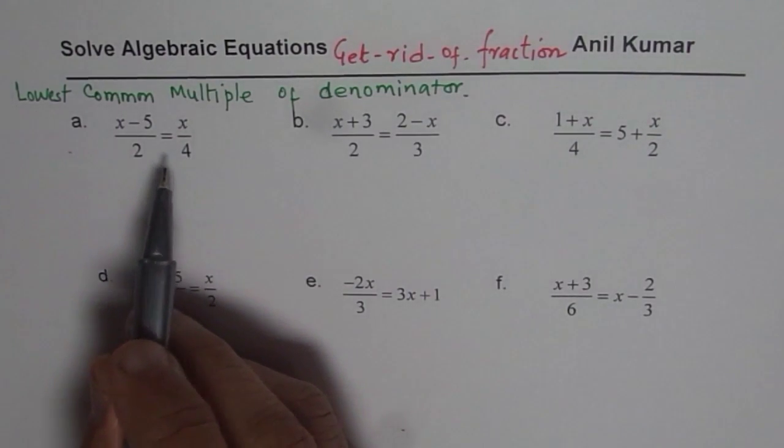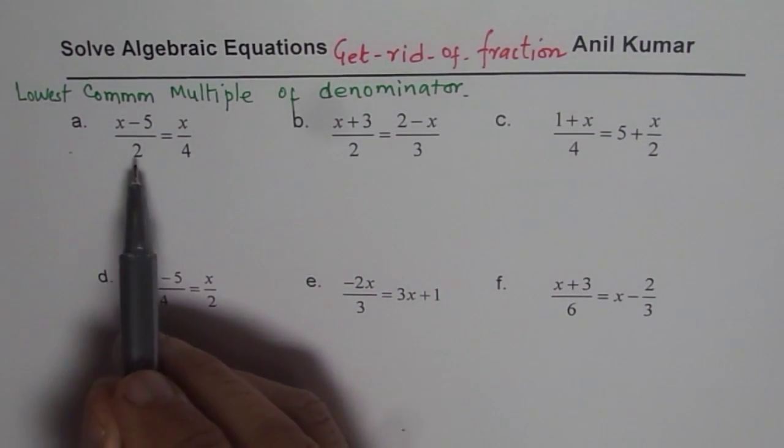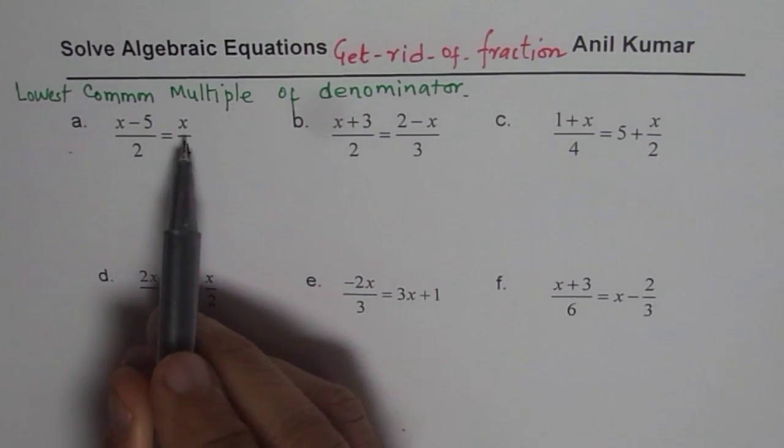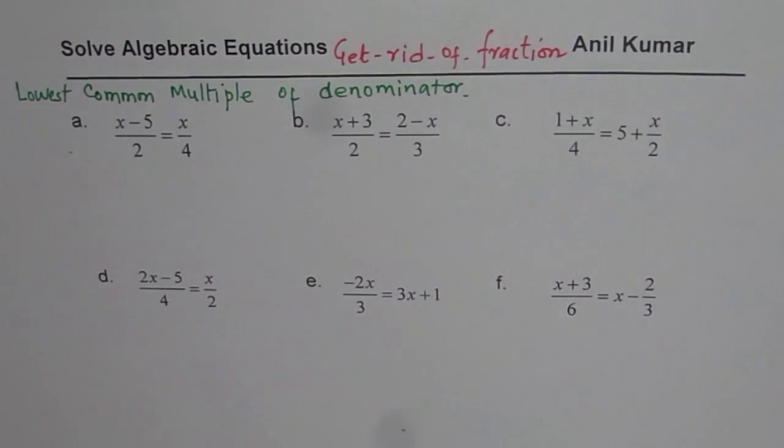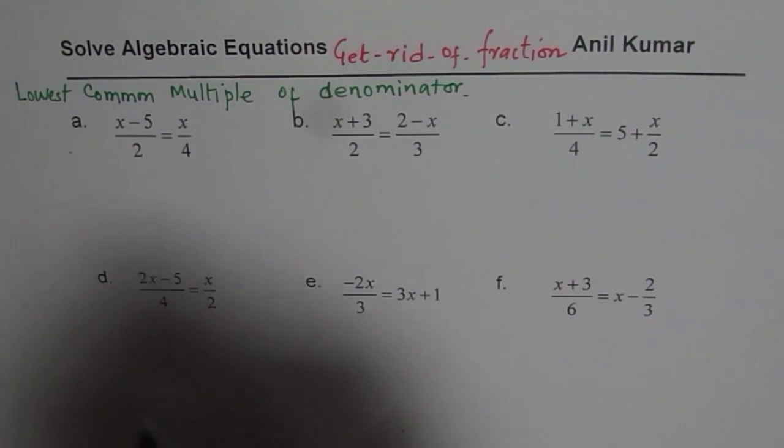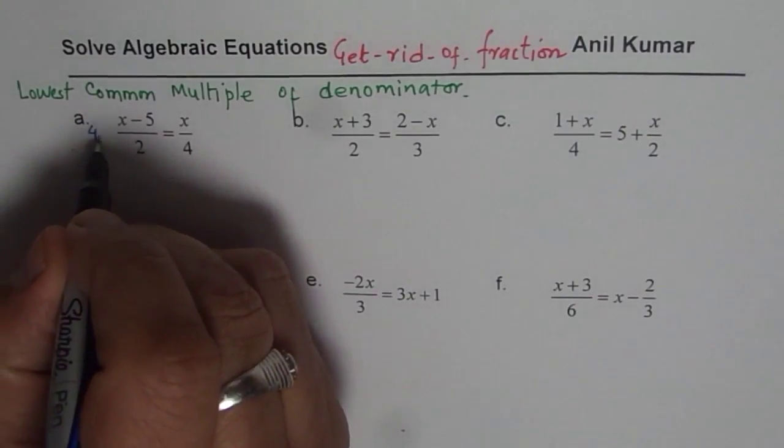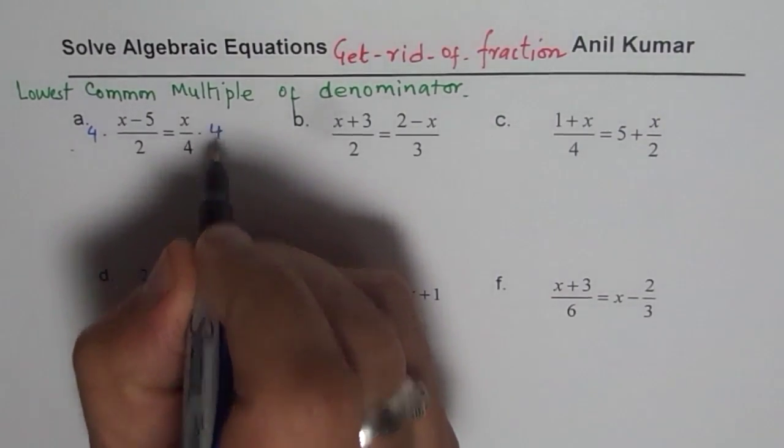So for 2 and 4 the lowest common multiple is 4 right. So we can multiply both sides by 4 and then simplify and get rid of fractions. So that is how we are going to do it. So in this particular expression let me write down here itself.